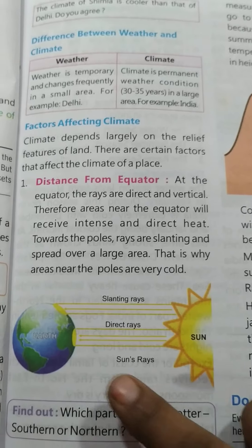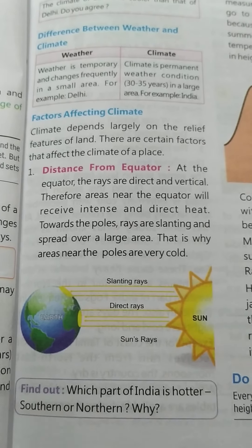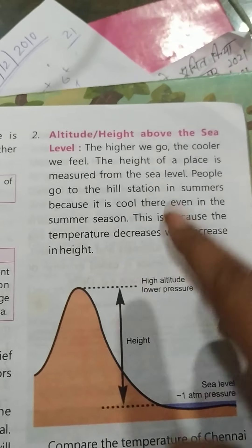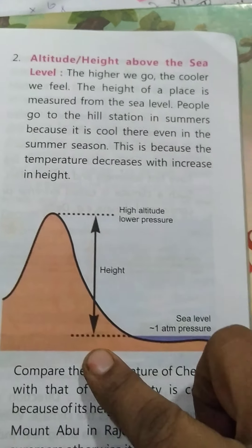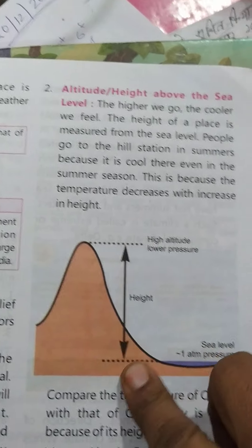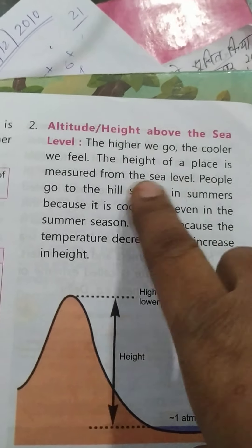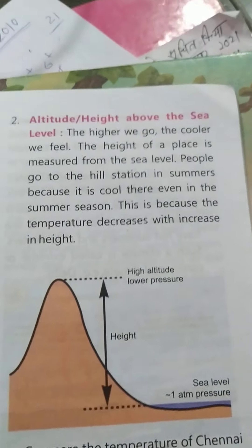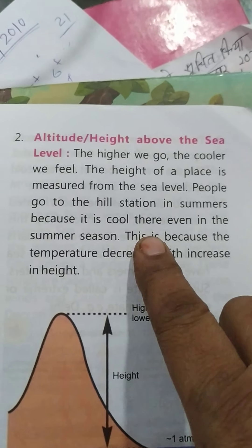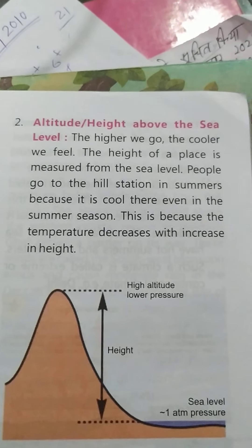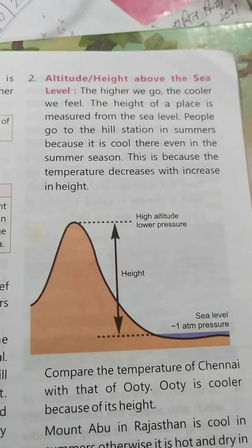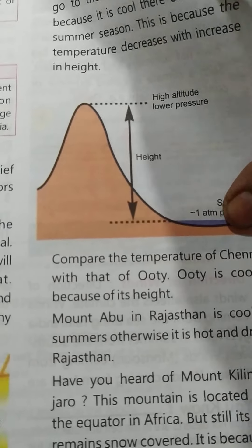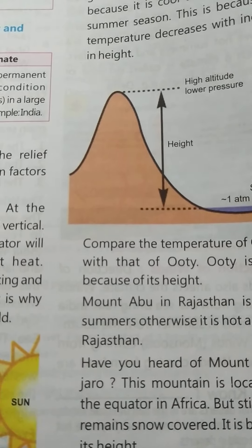Another factor is altitude — the height of a place. As altitude increases, temperature decreases. The height of a place is measured from sea level.